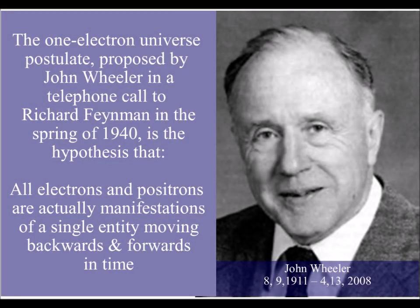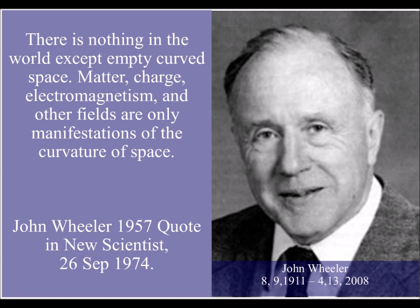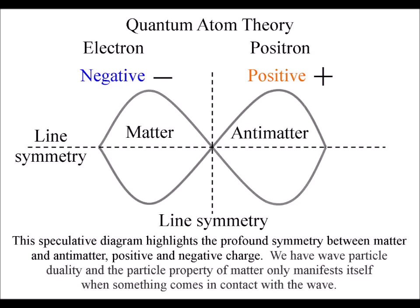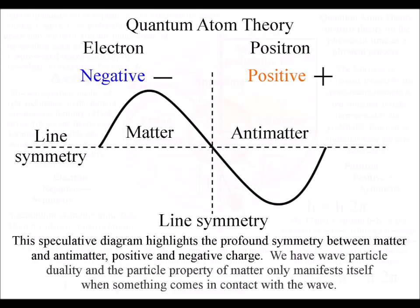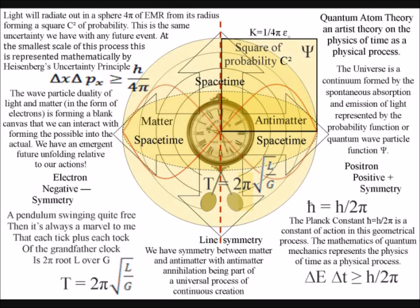The one electron universe is a fascinating idea, with electrons and positrons — the antiparticle of the electron — being explained as manifestations of a single entity moving backwards and forwards in time. The idea explains why all electrons and positrons have the same mass and magnitude of charge, the only difference being that the electron carries negative charge and the positron carries positive charge.